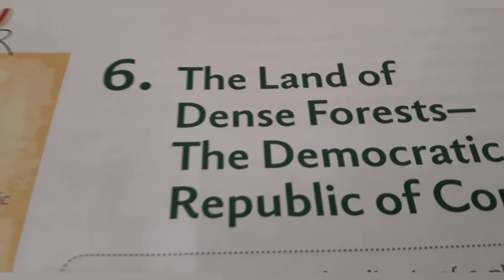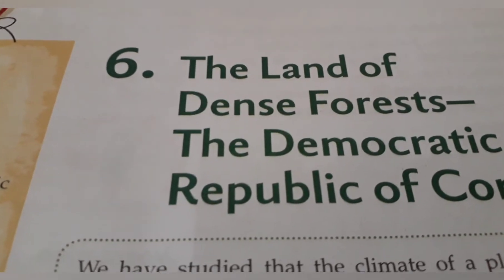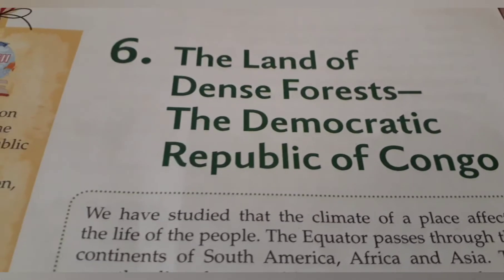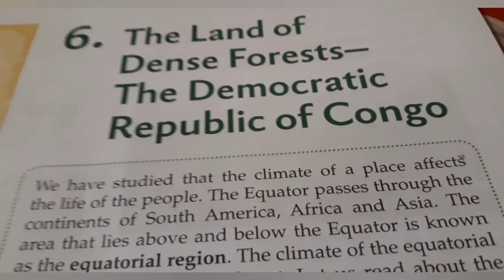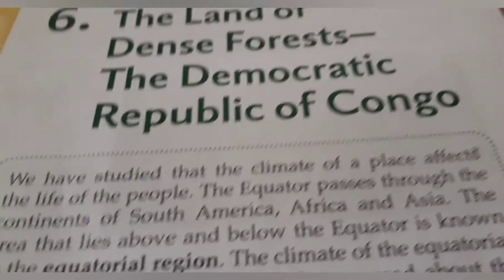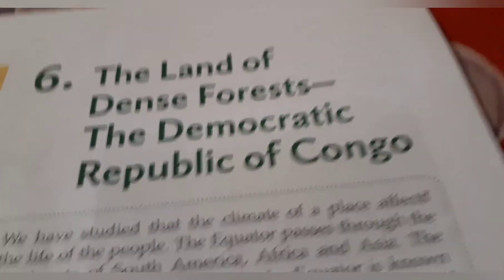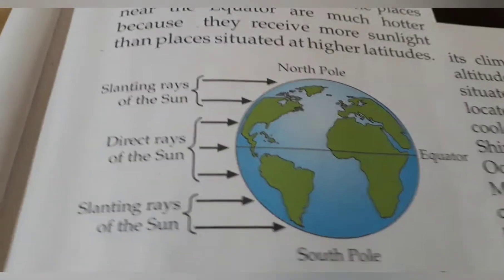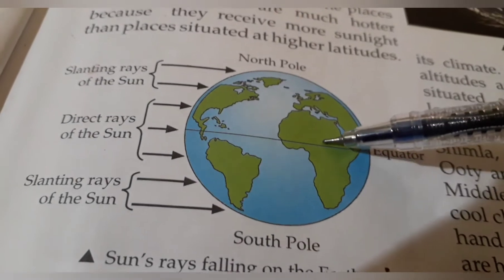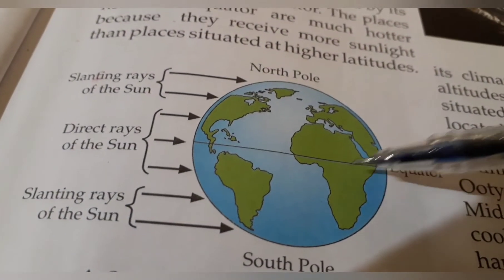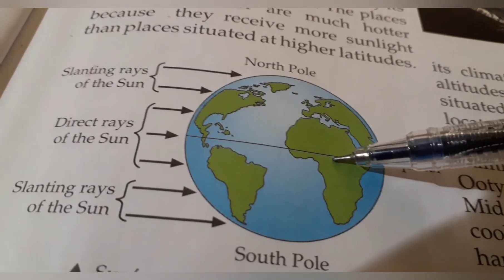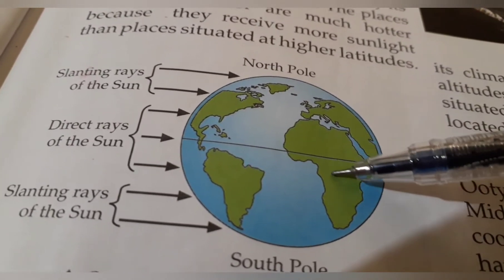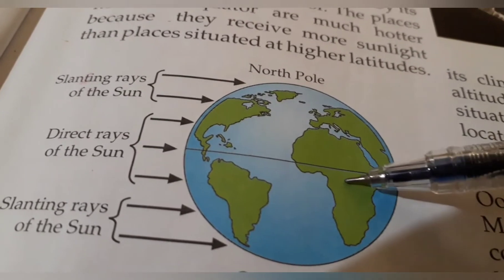Coming to chapter number 6: the land of dense forest, the Democratic Republic of Congo. The Democratic Republic of Congo is a place in Africa, which is an equatorial region. In this globe, you will find DRC — the Democratic Republic of Congo — near the equator, which has the dense forest.